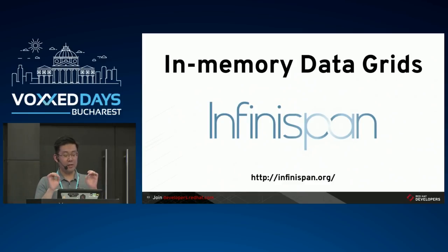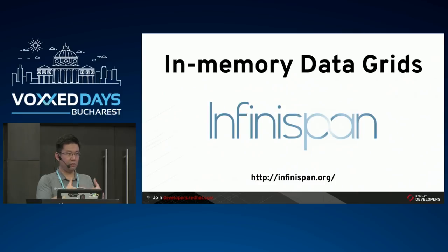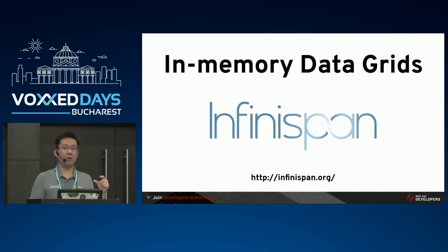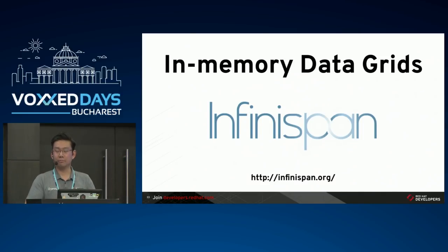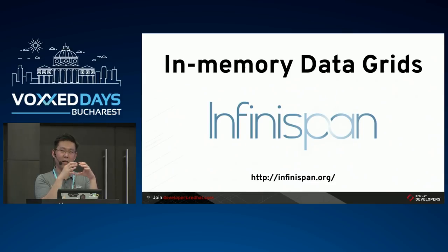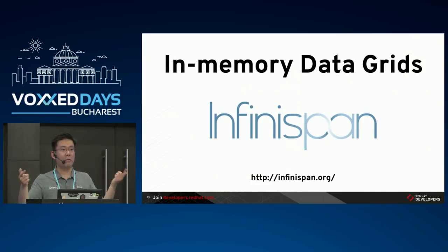Distributed processing is another nice feature of in-memory data grids. The traditional way is fetching data from the database to the application, processing it, and writing back. But if the data is very big and your code is very small, why not move the small part to the data instead? In-memory data grids typically have distributed processing capability - your data can be sharded across the globe. You create a small piece of code, maybe one or two kilobytes, send it to the grid, and the nodes process the query and return just the aggregated results. InfiniSpan is an open source project that implements the in-memory data grids pattern.